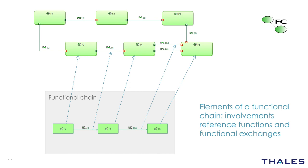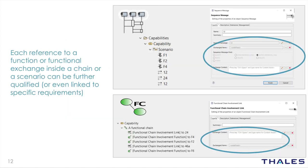A functional chain is described by a series of involvements that reference functions and functional exchanges. Scenarios and functional chains contain their own elements, meaning that each reference to a function or a functional exchange inside a chain or scenario can be further qualified. For example, we can select which exchange items are actually flowing on the sequence message, and we can allocate requirements to these involvements and sequence messages.